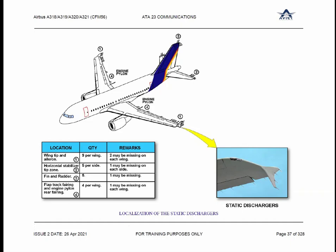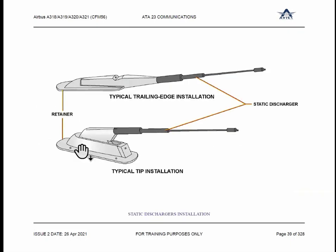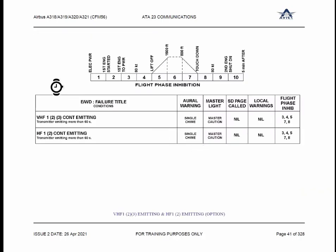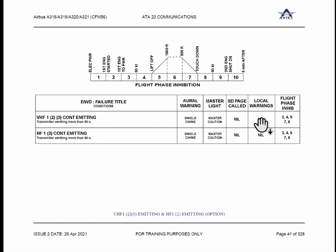There are two types of static dischargers installed on the aircraft. One is flat, another is at 30 degrees — just with a localization effect at different locations. Some places it is flat, some places it is 30 degrees. Regarding ECAM messages, you will get messages for HF 2 and 3 emitting, HF 1 and 2 emitting — this is optional if they are transmitting for more than 60 seconds. On the ECAM engine warning display you will get the message HF 1, 2, and 3 emitting more than 60 seconds. That happens sometimes because the switch is stuck after transmission. Single chime will come, master caution will come, inhibited in flight phases 3, 4, 5, 7, and 8 — during takeoff and landing.